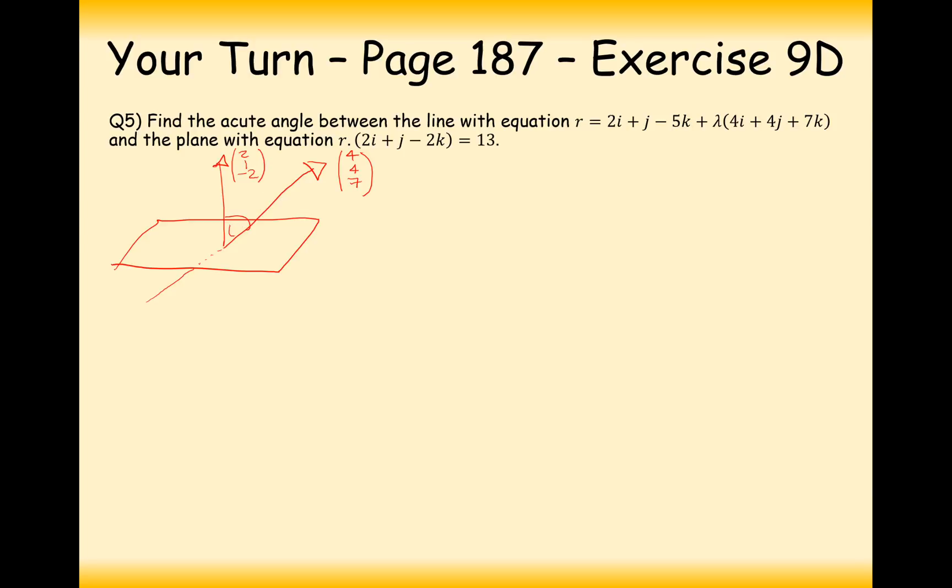So, what we'll do first is we'll find the angle between these two vectors here. So, it's going to be cos θ equals 4, 4, 7 dotted with 2, 1, minus 2 divided by, okay, big calculation now, the square root of 4 squared plus 4 squared plus 7 squared times the square root of 2 squared plus 1 squared plus 2 squared.